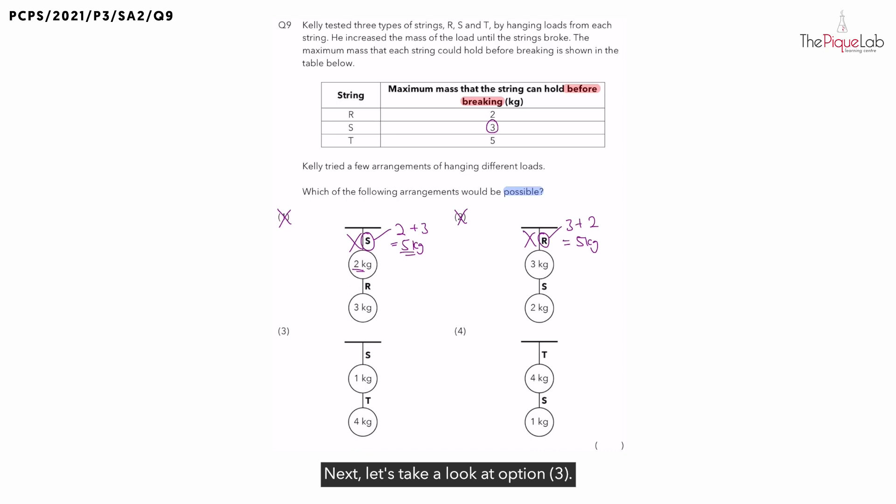Next, let's take a look at option 3. For option 3, we also have string S at the top, but what is the load that string S has to support? String S has to support all the loads below it. So let's add them up together. String S has to support 1 plus 4kg, and we get 5kg. Can string S support a load of 5kg? No. So 3 is out.